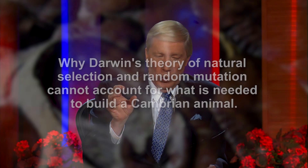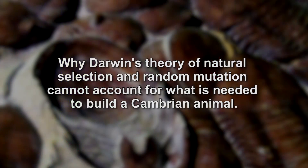This next clip explains why Darwin's Theory of Natural Selection and Random Mutation cannot account for what is needed to build a Cambrian animal.